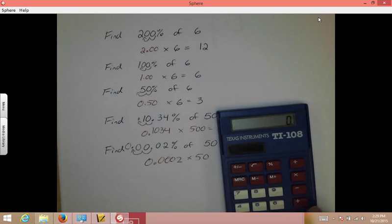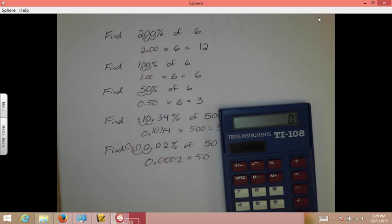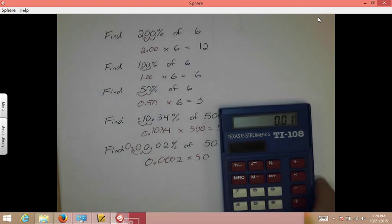Be careful when you have so many 0s. Double check in your calculator. 0.0002, let's see, 1, 2, 3 zeros after the decimal, times 50. And I get 0.01.